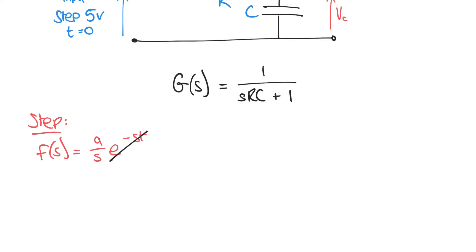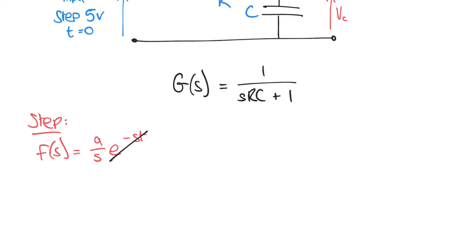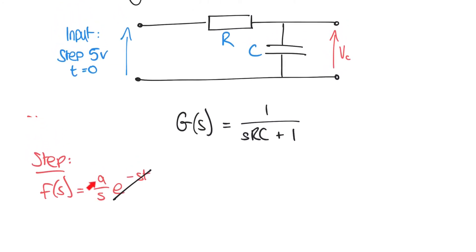If you revisit the table of Laplace transforms, a constant A becomes A over S when transformed. So a step function at time T equals 0 is equivalent to a constant — we're saying the signal is immediately at that value from time equals 0. Since the size of our step input is 5 volts, our input voltage in the S domain is VI of S equals 5 over S.